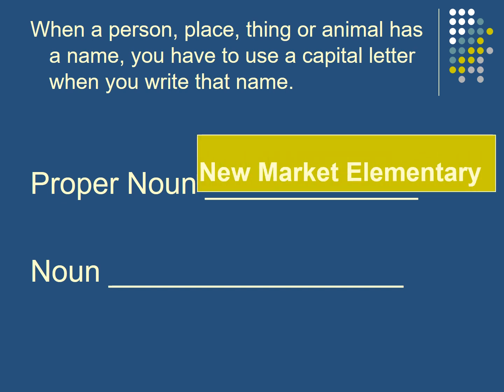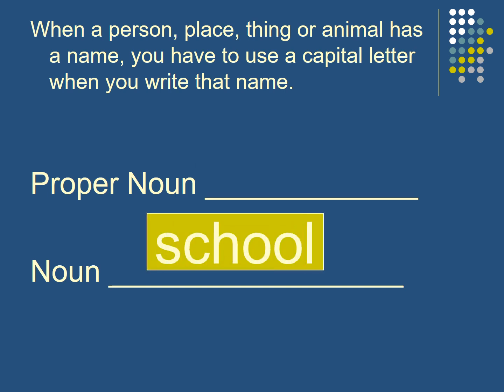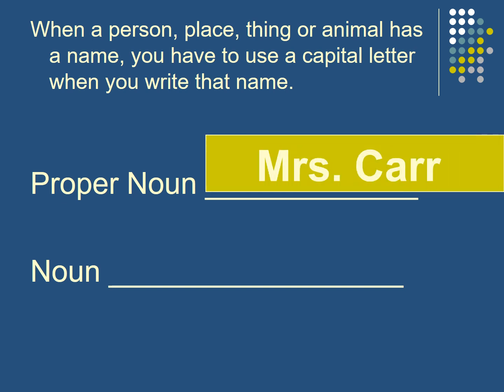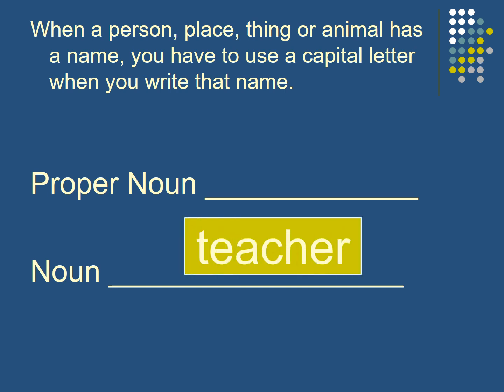New Market Elementary — this is the name of the school, so I have to capitalize all the words. If I say school — any school — I write it with a small letter. If I have Mrs. Kerr, this is the name of a woman. But if I have teacher — any teacher — it's not a name, so I write it small, not capital.